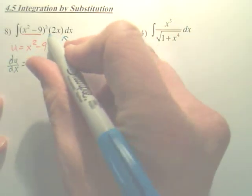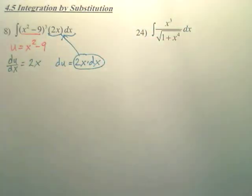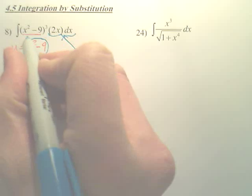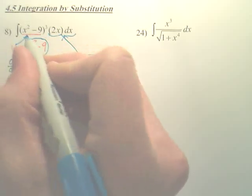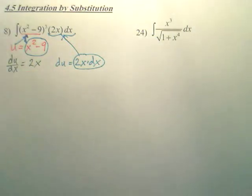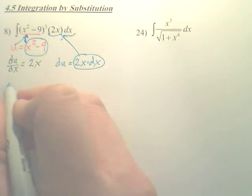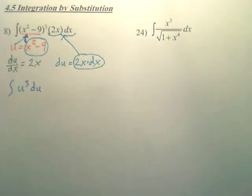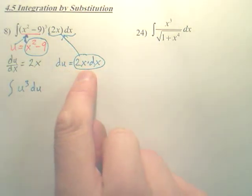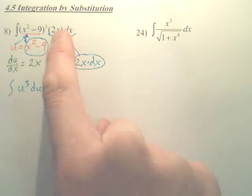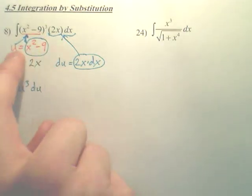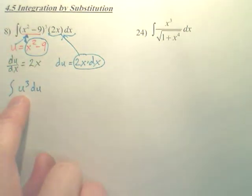Can I make this replace that? Is that the same thing? Can I have this replace this? Can that u replace that? Can I now have u cubed du? See right here — doesn't du equal this? So I can replace du with this. And here, doesn't x squared minus 9 equal u? So can I replace it with u? So I have u to the third du.